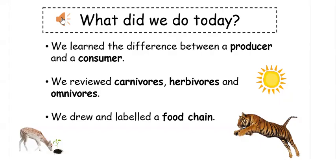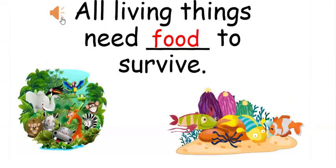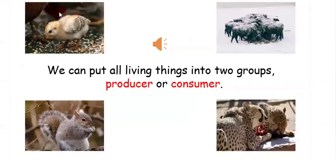We learned the difference between a producer and a consumer. We reviewed carnivores, herbivores, and omnivores. We drew and labeled a food chain. All living things need food to survive.